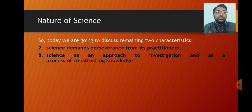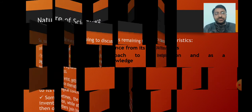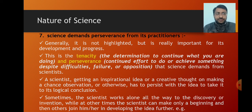Let us move ahead to discuss the remaining two characteristics to understand the nature of science completely. The remaining two are: 7. Science demands perseverance from its practitioners. 8. Science as an approach to investigation and as a process of constructing knowledge. Let us discuss the first one — science demands perseverance from its practitioners. Generally this characteristic is not highlighted, but it is really important for the development and progress of science.